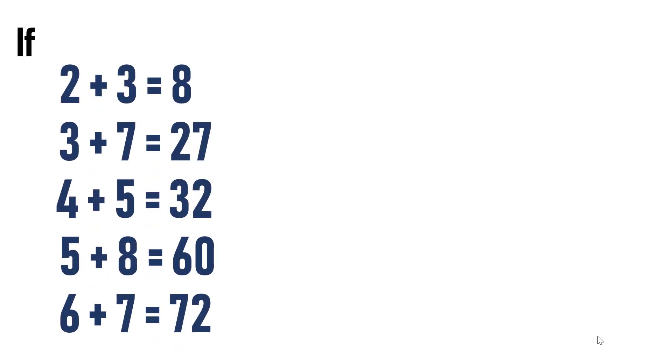If 2 plus 3 equals 8, 3 plus 7 equals 27, 4 plus 5 equals 32, 5 plus 8 is equal to 60, 6 plus 7 equals 72. What is 7 plus 8?